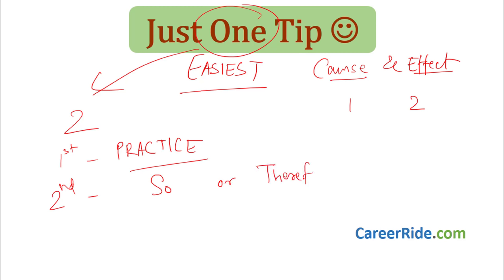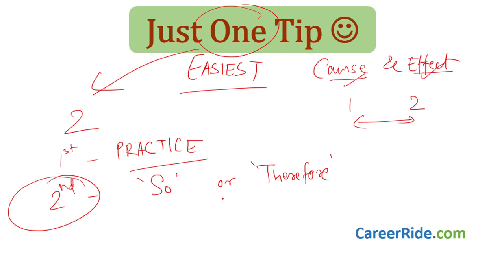You can use either 'so' or 'therefore'. By using these two words to join both the sentences, we can decide which is the cause and which is the effect. Let's take an example to understand this tip — it will help you solve all sums related to cause and effect.